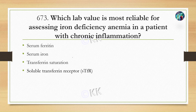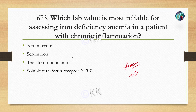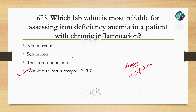Which lab value is most reliable for assessing iron deficiency anemia in a patient with chronic inflammation? Option A, serum ferritin. Option B, serum iron. Option C, transferrin saturation. Option D, soluble transferrin receptor. The correct option is D, soluble transferrin receptor, because ferritin is an acute phase reactant and may falsely elevate with inflammation.